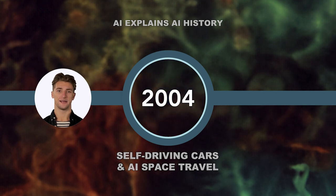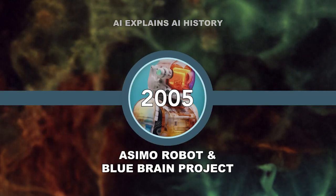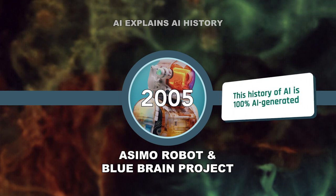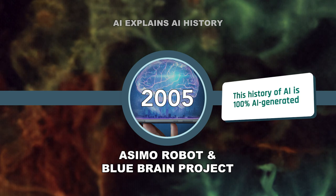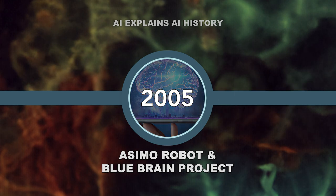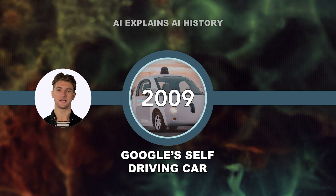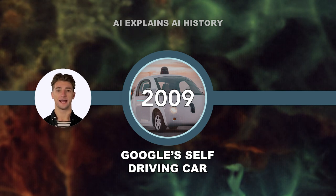NASA's robotic exploration rovers Spirit and Opportunity also autonomously navigated the surface of Mars. In 2005, Honda's AI humanoid ASIMO robot delivered trays to customers in a restaurant by walking on two autonomous legs. Blue Brain was also born, a research project to simulate the brain at molecular detail. In 2009, Google built a self-driving car, the first of its kind — a breakthrough in self-driving technology that would eventually be replicated by Tesla.